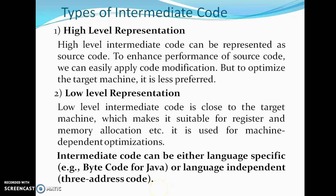There are two types of intermediate code: high-level representation and low-level representation. High-level intermediate code is very close to the source language — it can be easily generated from source code and we can easily apply code modifications to enhance performance, but it is less preferred for target machine optimization. Low-level intermediate code is very close to the target machine, making it suitable for register and memory allocation, so it is good for machine-dependent optimizations. Intermediate code can be language-specific, like Java bytecode, or language-independent, like three-address code.